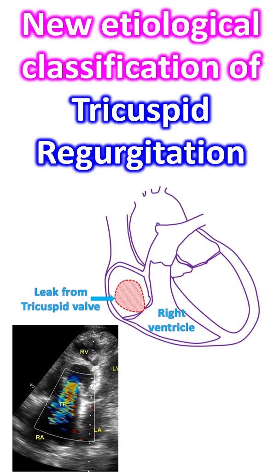Secondary TR is the commonest, contributing to 80%. Ventricular secondary TR could be due to heart failure — either heart failure with preserved ejection fraction or heart failure with reduced ejection fraction — left-sided valvular lesions causing post-capillary pulmonary hypertension, pulmonary causes for pre-capillary pulmonary hypertension, or due to a right ventricular cause with RV dilatation or dysfunction, as in RV infarct or dysplasia.